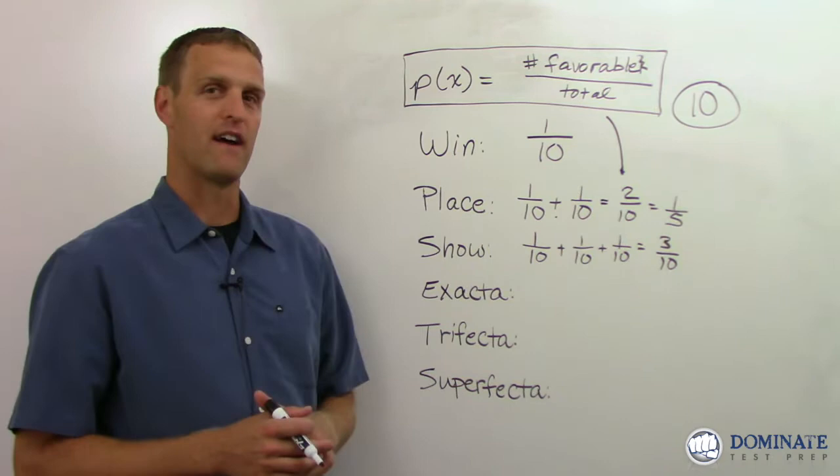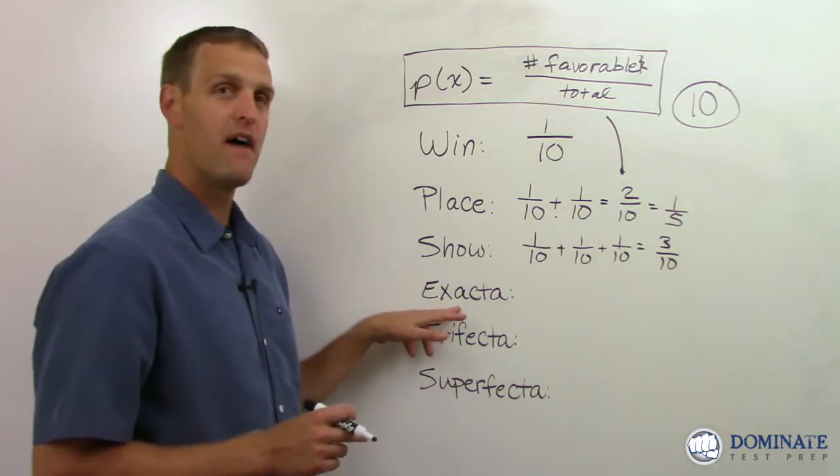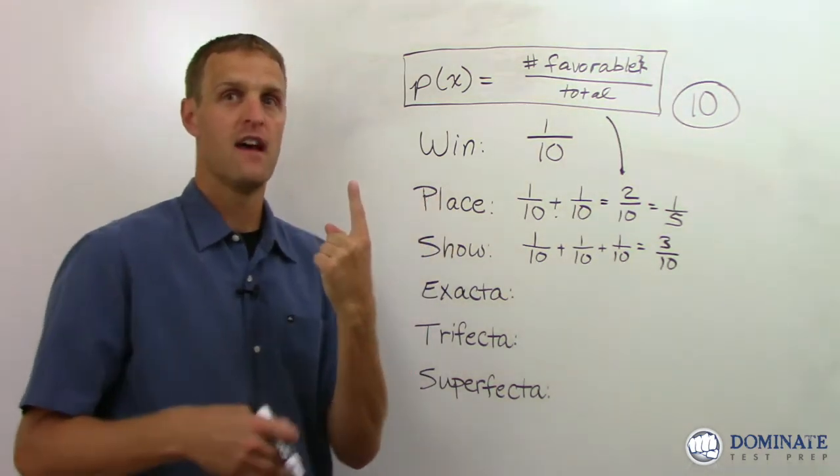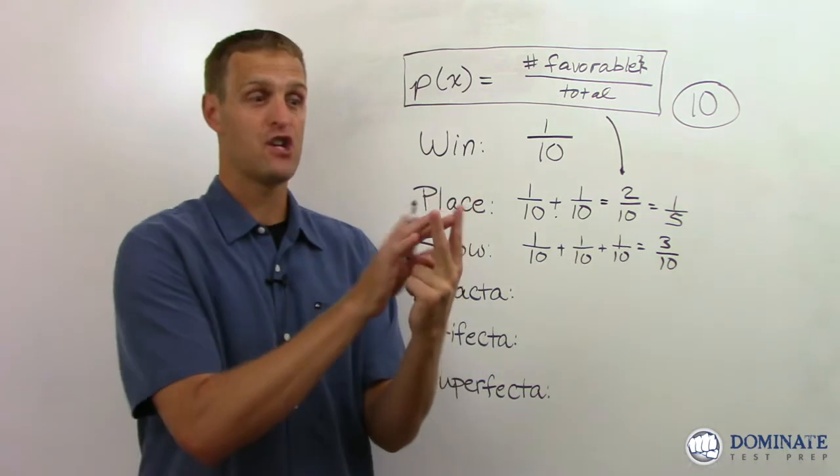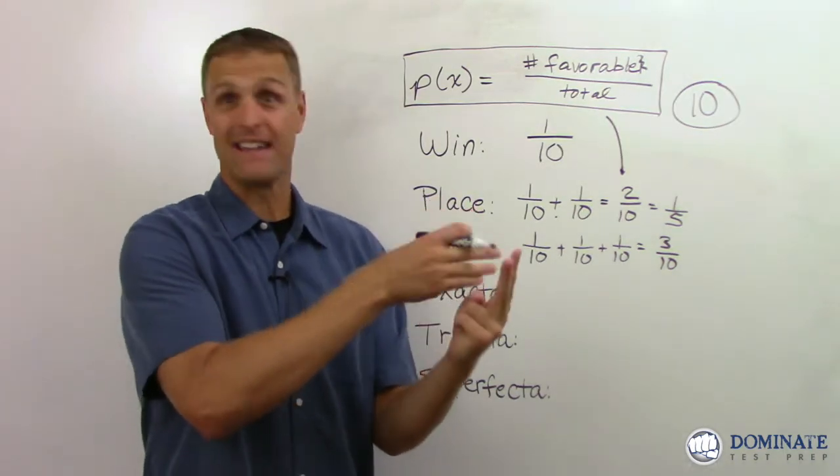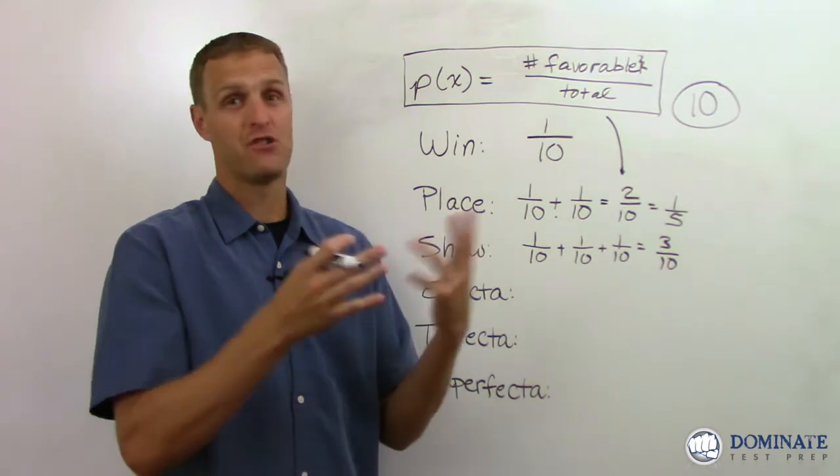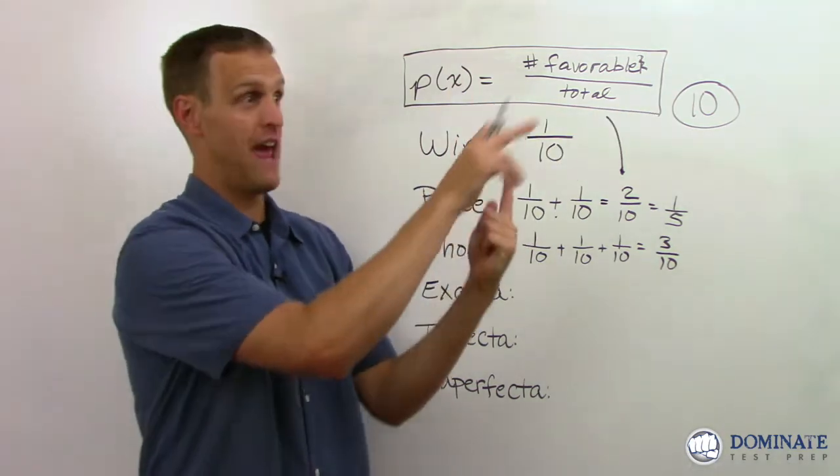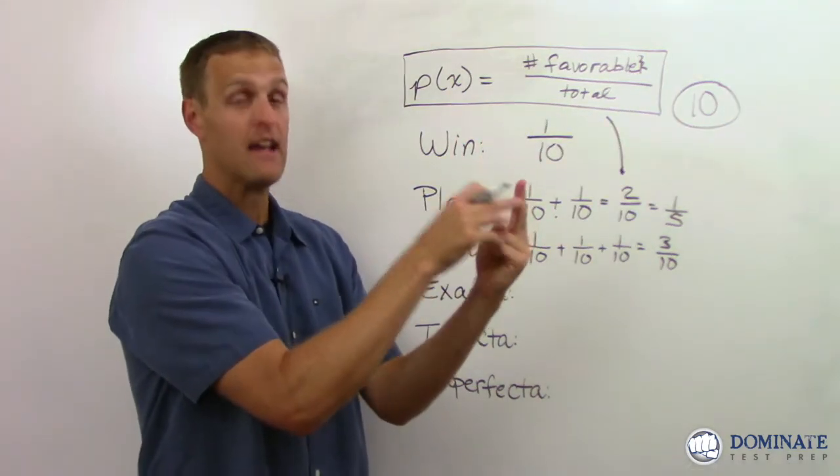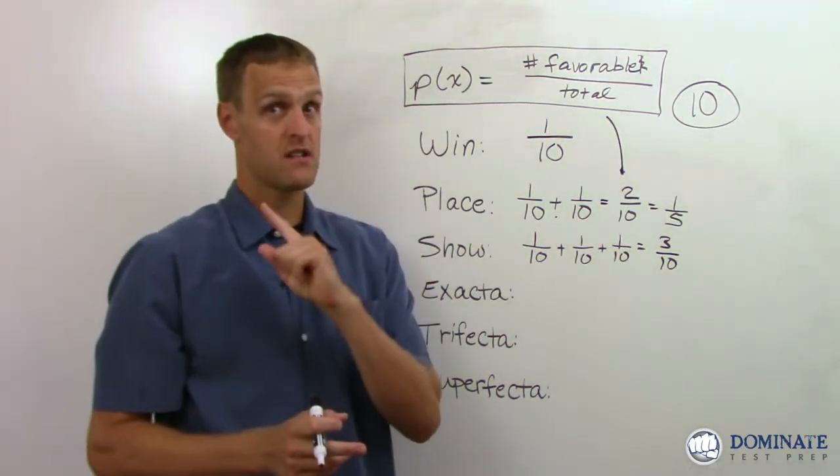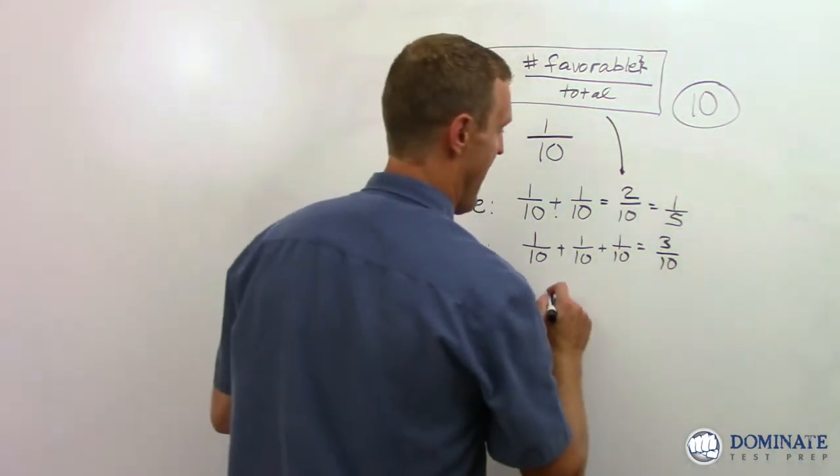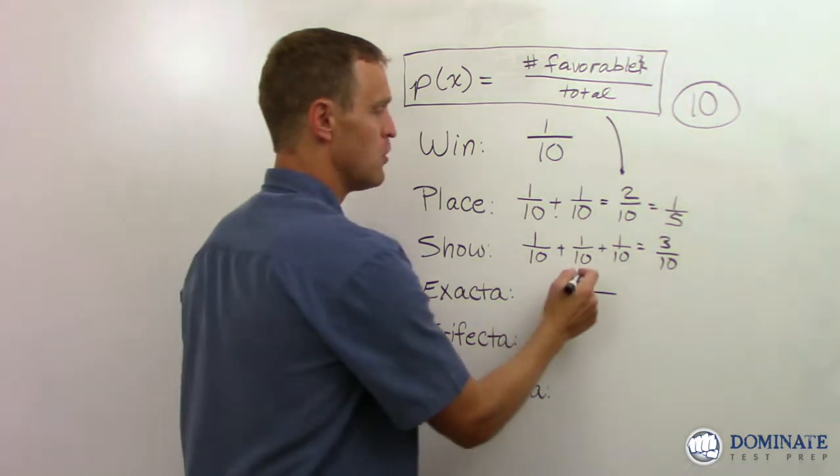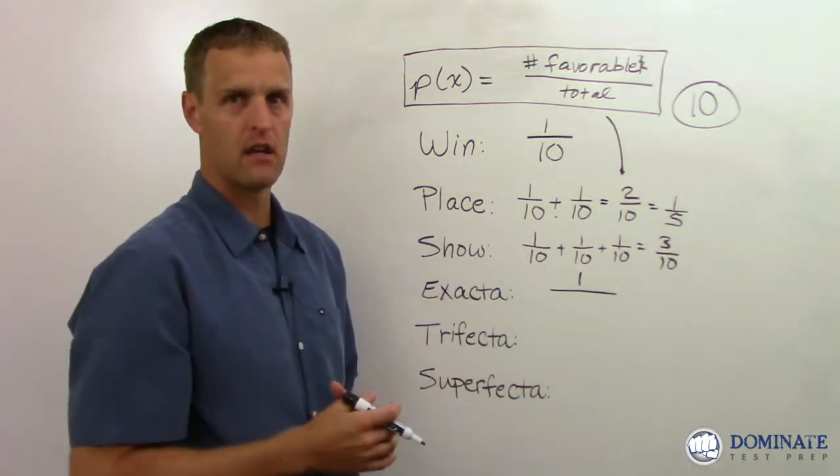The exacta, the trifecta, and the superfecta. And this is a situation where if you're going to bet the exacta, that means you are going to pick the horse that finishes first and the horse that finishes second in exactly the right order. So not just, hey, I picked two horses and they happen to finish first or second. You have to say, I want this horse to finish first and then this other horse to finish second in that order.